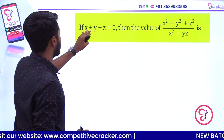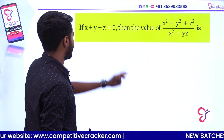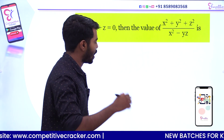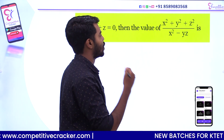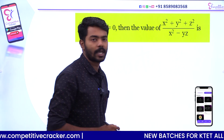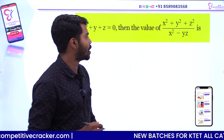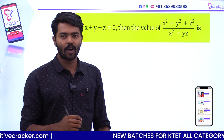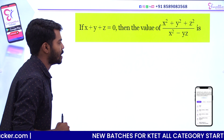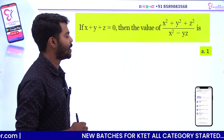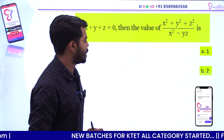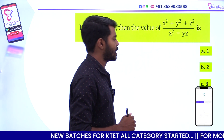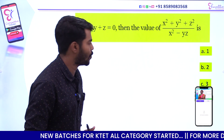Let us go. If x plus y plus z is equal to 0, then the value of x² plus y² plus z² divided by x² minus yz is: option A: 1, option B: 2, option C: 3, option D: 4.